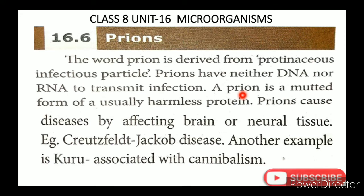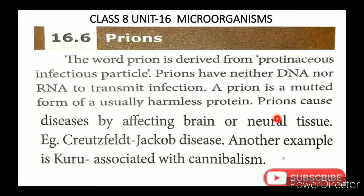அப்படினு சொல்றாங்க. இது mutated என்று சொல்லா — தன் உருமாத்திக்கிறது என்பது. இப்ப வந்து Corona Virus-ல mutation என்று சொல்வது போல — அது அந்த இடத்துக்கு தக்கவாறு தன்னை develop பண்ணிக்கிட்டு உருமாத்திட்டே இருக்கிறதை நாம் mutated என்று சொல்வோம். PREONS cause diseases by affecting brain or neural tissue. இந்த PREON-கள் brain-ஐயும் neural tissue-ஐயும் பாதிச்சே நோய்களை ஏற்படுத்தும். Creutzfeldt-Jakob disease என்பது இதற்கு ஒரு example. (Preons are described as mutated — meaning they transform themselves. Like the Corona Virus mutation, they develop and change according to their environment. Preons cause diseases by affecting brain or neural tissue; Creutzfeldt-Jakob disease is an example.)